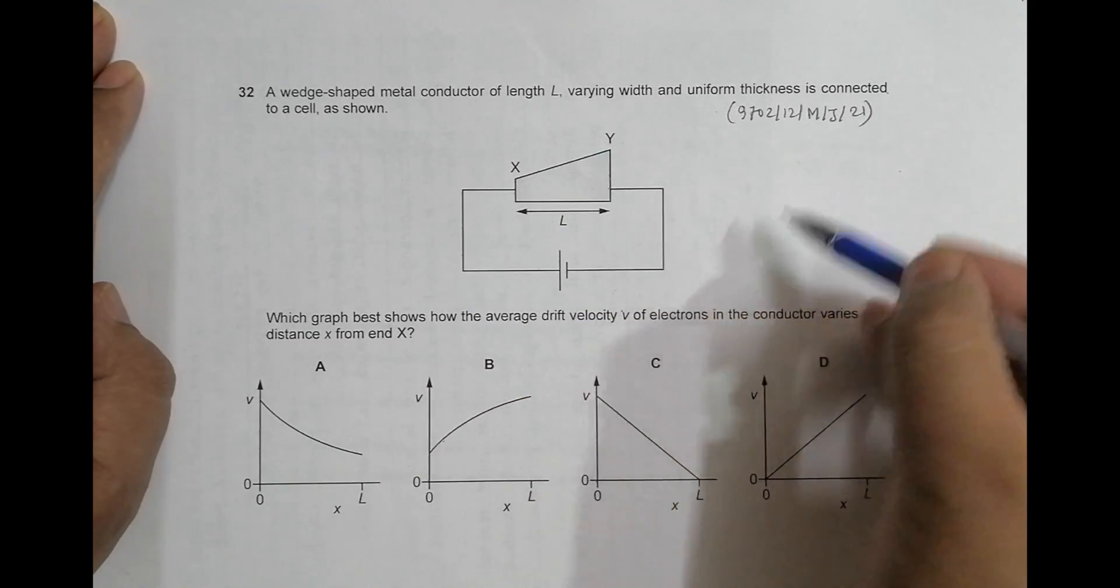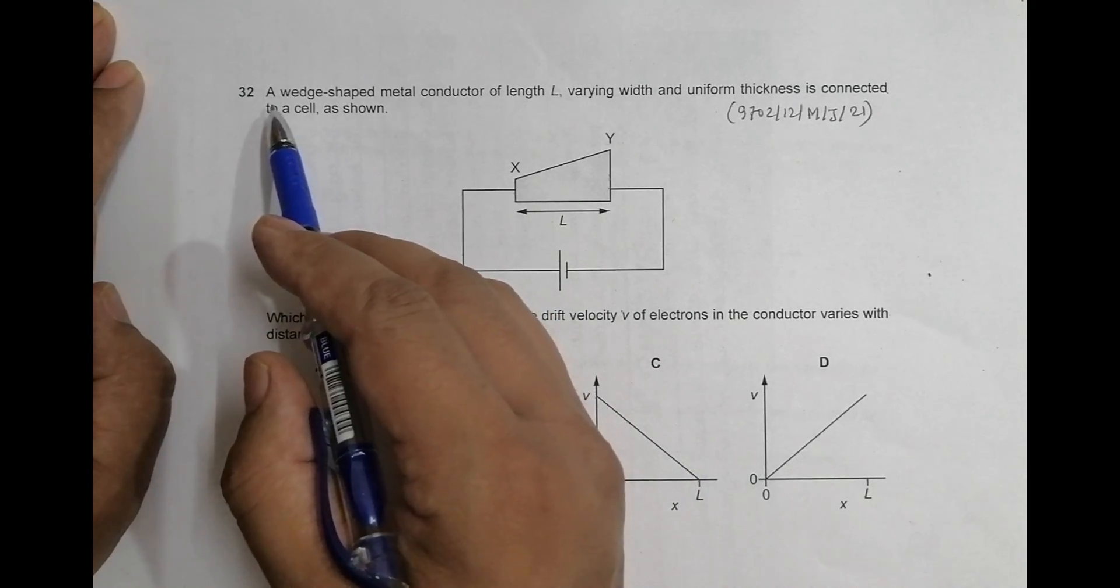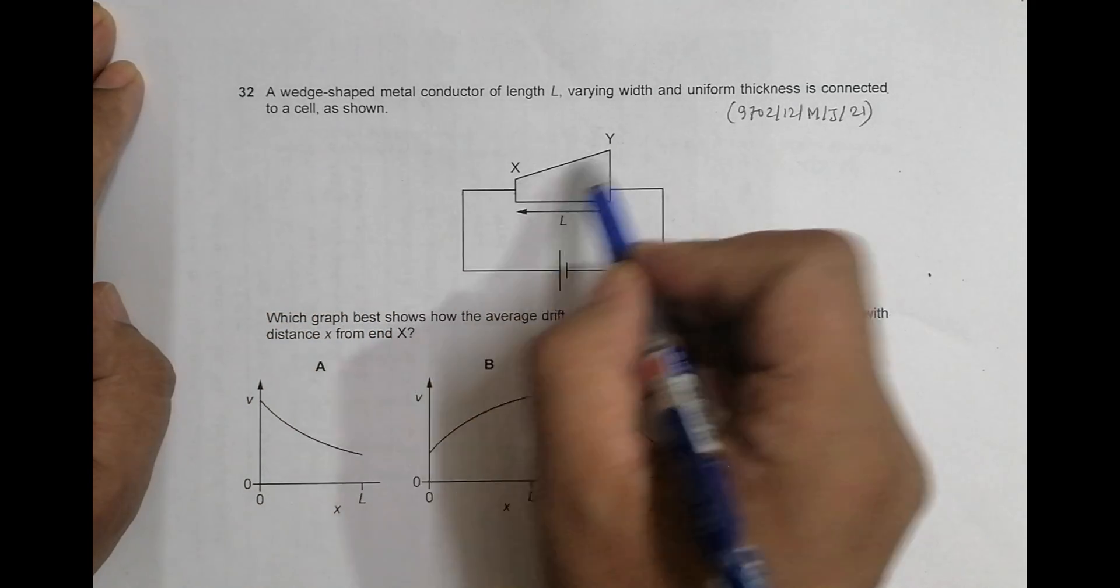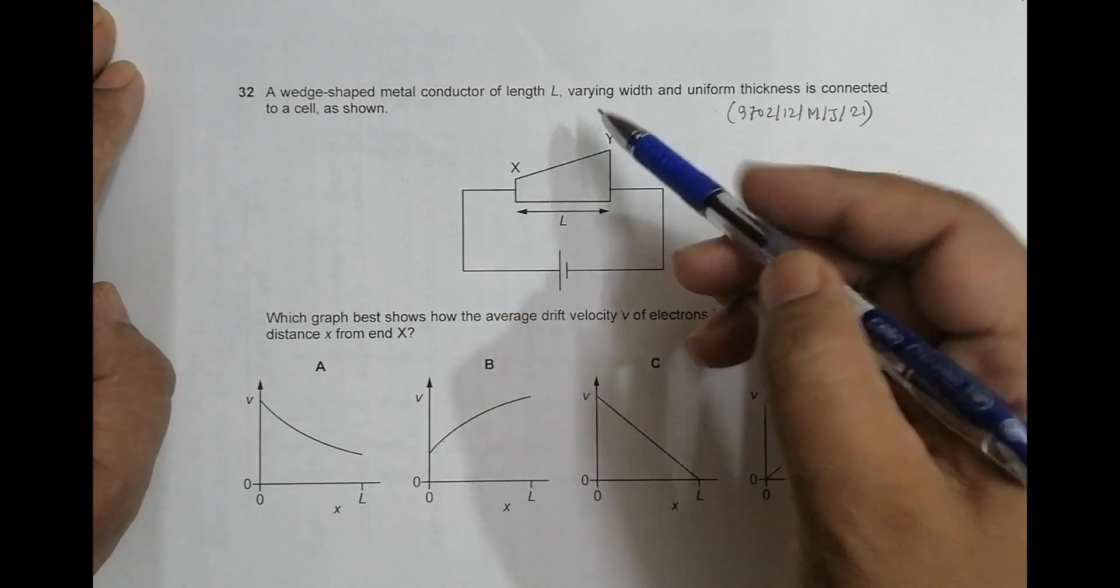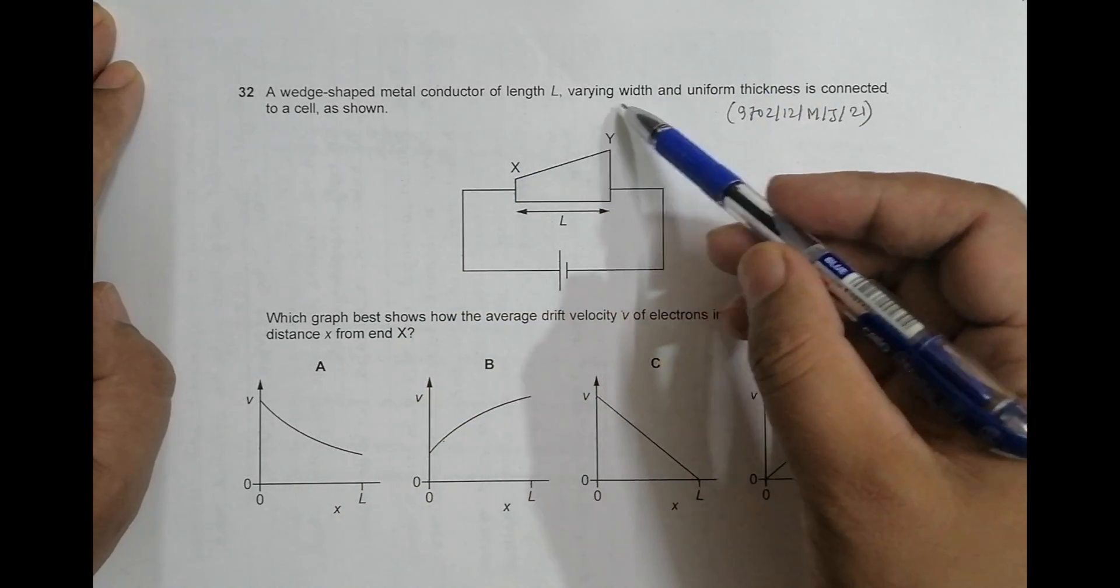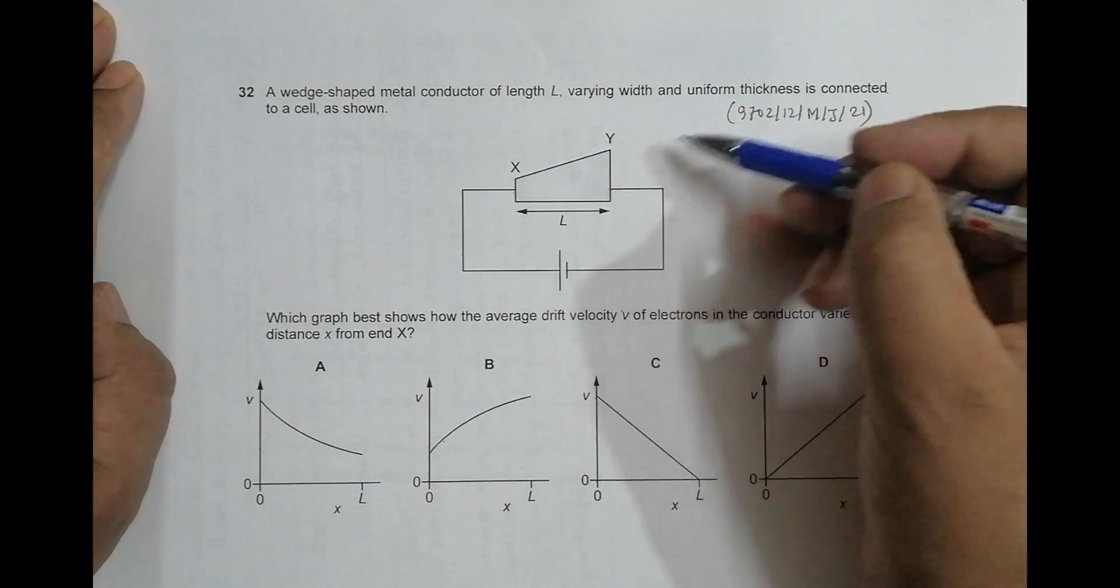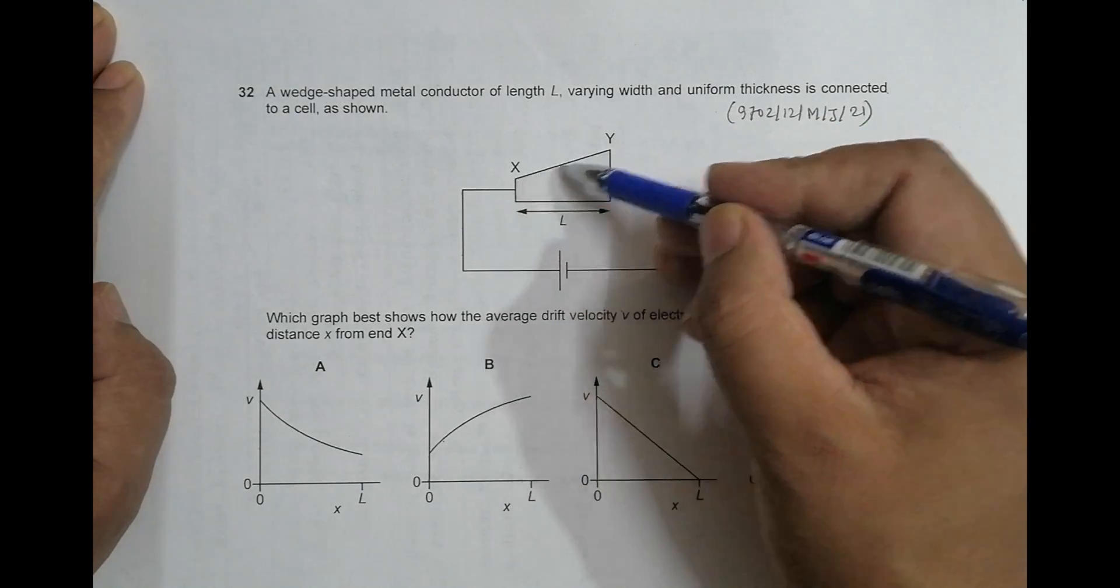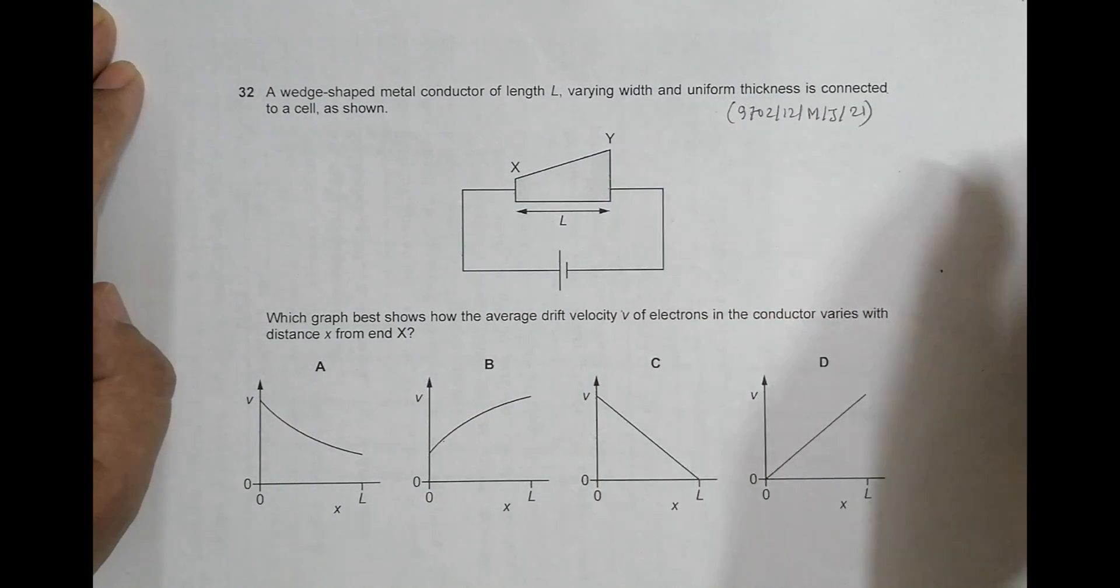This is again a question of drift velocity as shown by the diagrams. It says a wedge-shaped metal conductor of length L, varying width. So its width is varying - here width is this much and here width is this, and we can see that it varies proportionally or uniformly.